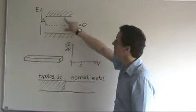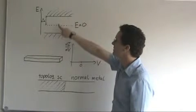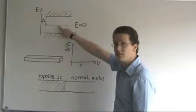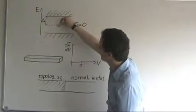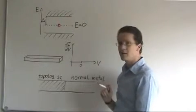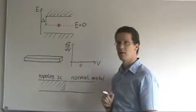This means that states always come in pairs, with the exception of a special point, namely E equals zero, right at the Fermi energy. A particle is always its own antiparticle and thus by definition a Majorana fermion.